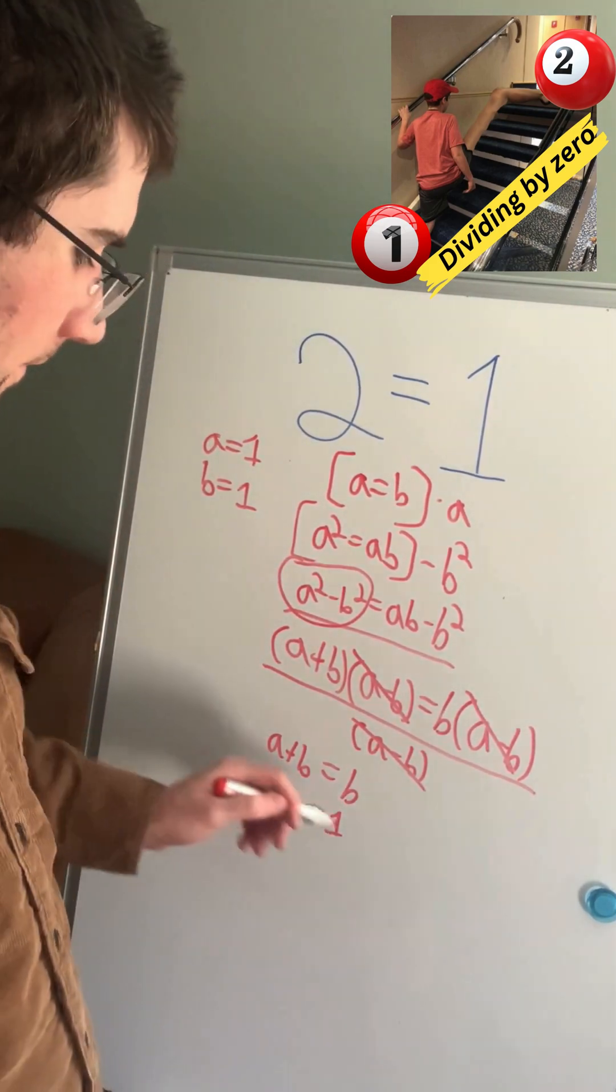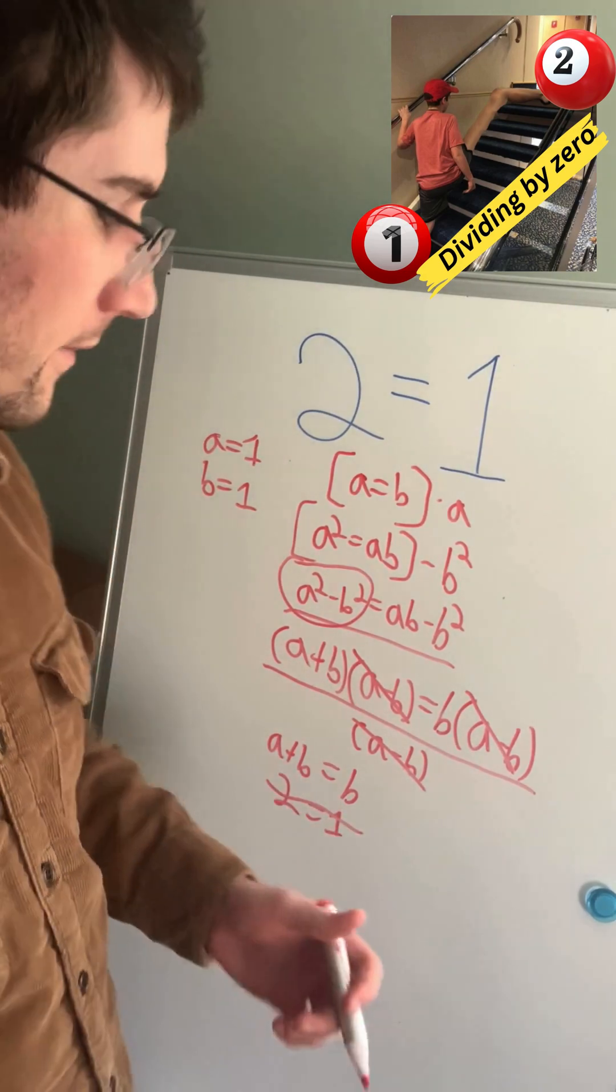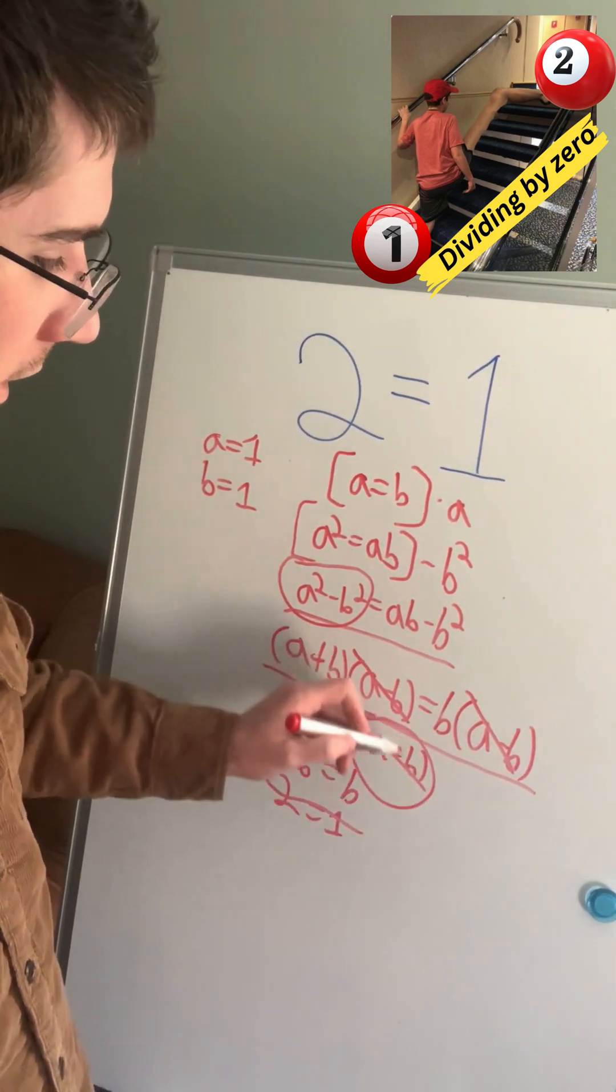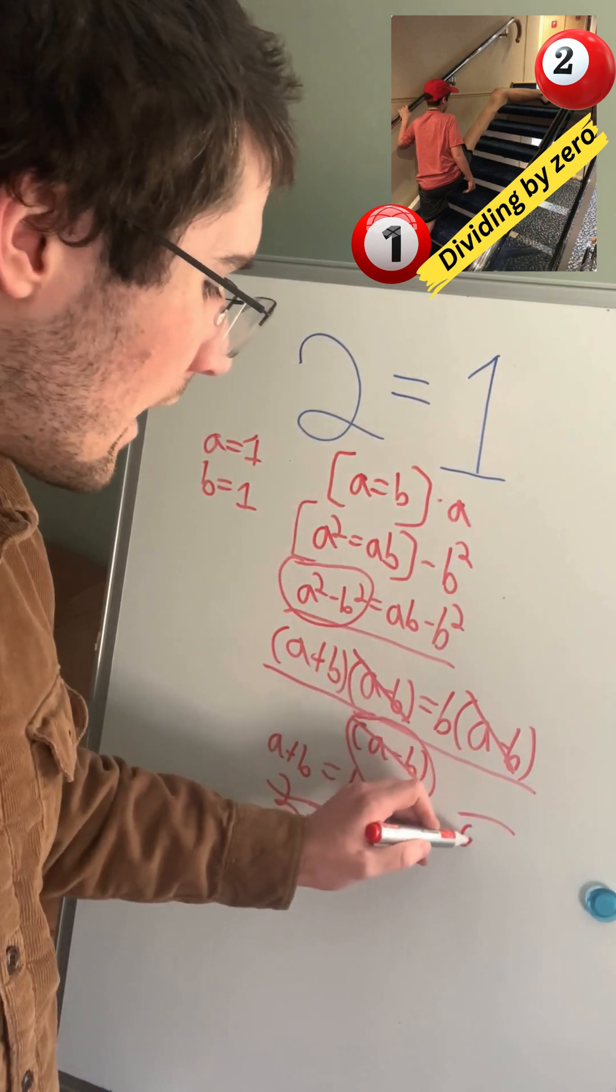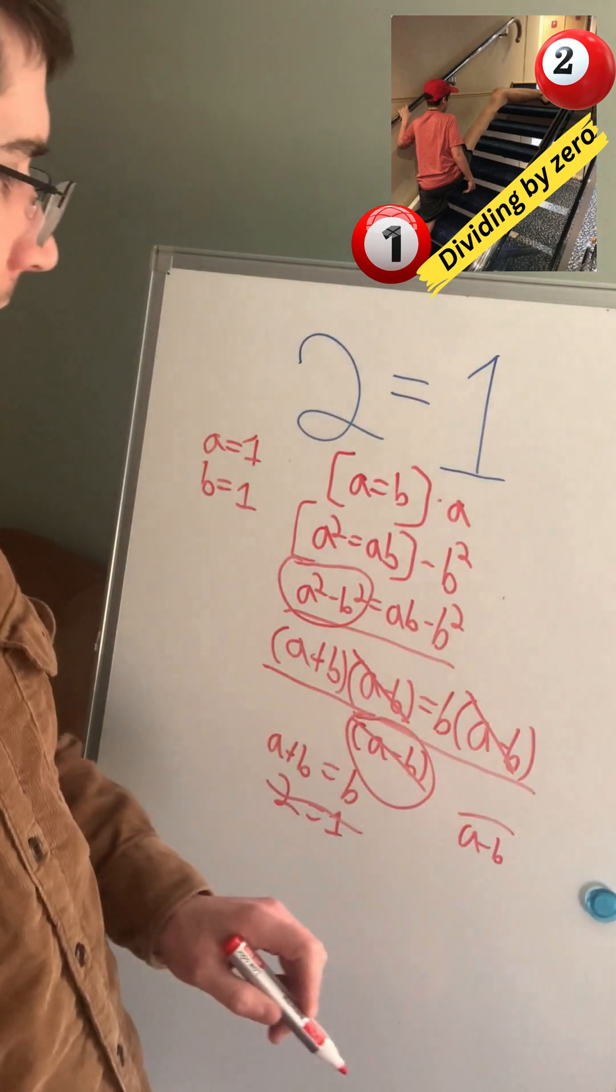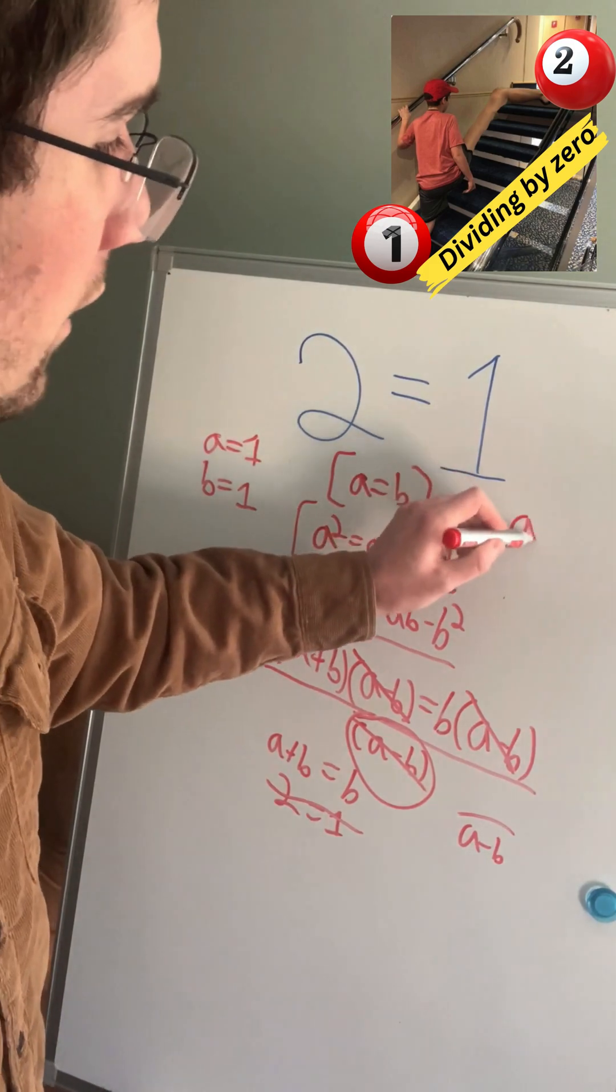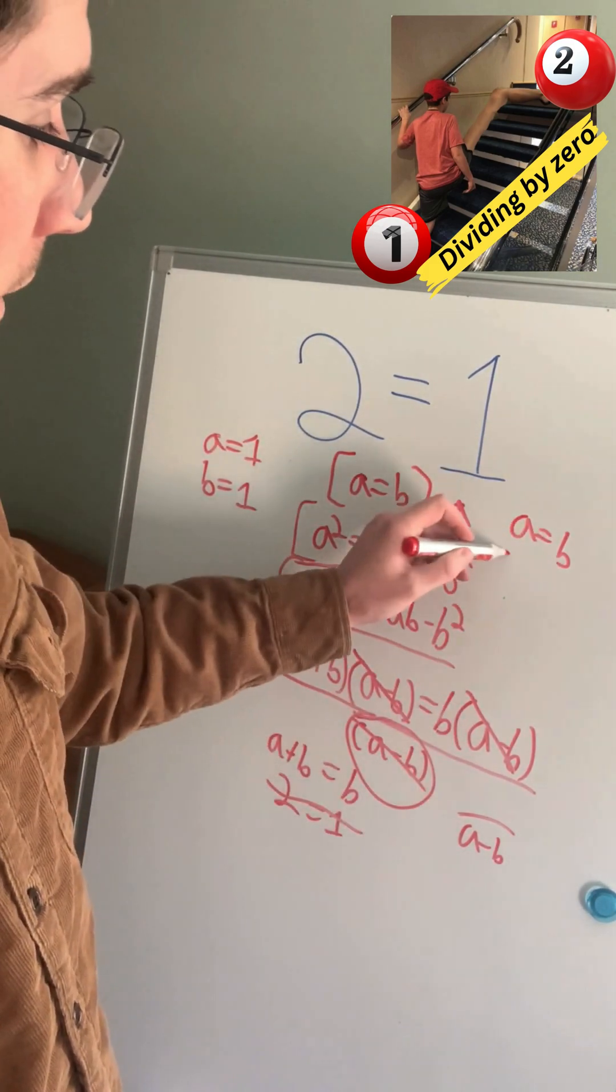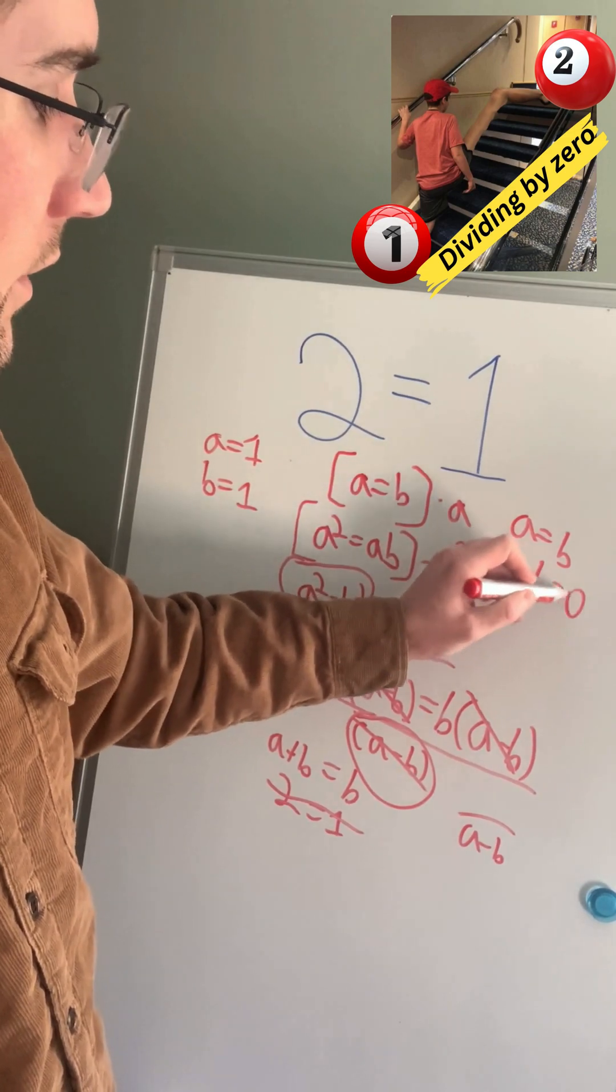Now, is that right? Of course not. And the reason is right here. We just divided by A minus B. But right here, it says that A equals B. And that must mean that A minus B equals 0.